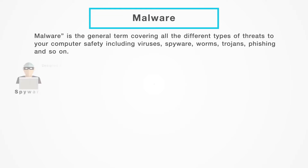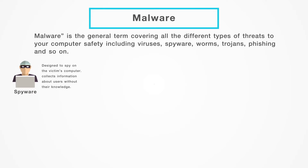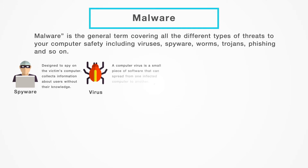Spyware is designed to spy on the victim's computer. It collects information about users without their knowledge. A computer virus is a small piece of software that can spread from one infected computer to another. The virus could collapse, steal, or delete data on your computer, even erasing everything on your hard drive. A virus could also use other programs, like your email program, to spread itself to other computers.